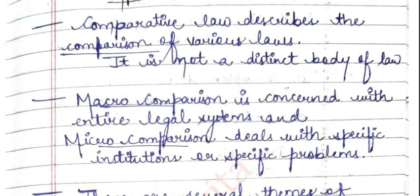For example, how the punishment system works in India, how it is in Canada, how it is in the US, Britain, etc. This is related to a specific institution. This is what is known as micro comparison — we are comparing a particular or specific concept.